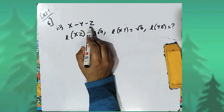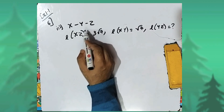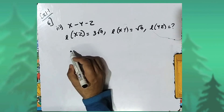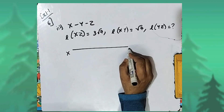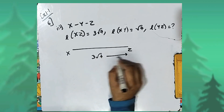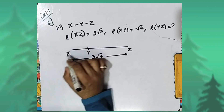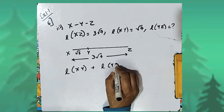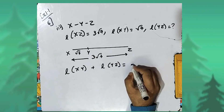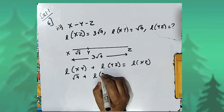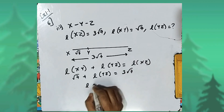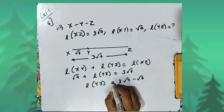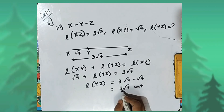In the third sub-part, it is given X–Y–Z, meaning point Y is between X and Z. Length XZ equals three root seven and length XY equals root seven; length YZ is to be found. Points X and Z are at the extremes and Y is in between. Length XY plus length YZ equals length XZ: root seven plus length YZ equals three root seven, so length YZ equals three root seven minus root seven, which is two root seven units.